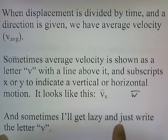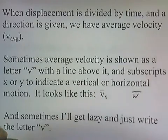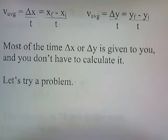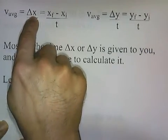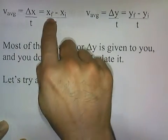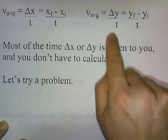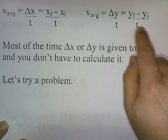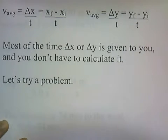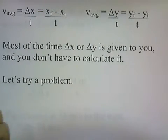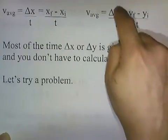Average velocity is displacement divided by time. If displacement is horizontal, we use delta x, and delta x is calculated from final position minus initial position. Average velocity in a vertical direction is delta y over t, where delta y is the final minus the initial positions on the vertical axis. Most of the time delta x or delta y is given to you, so you just use delta x over t or delta y over t.